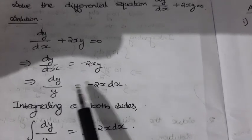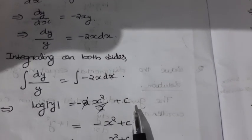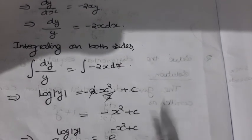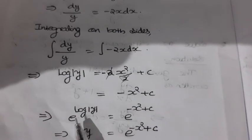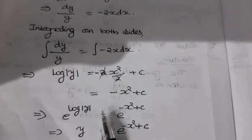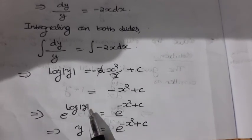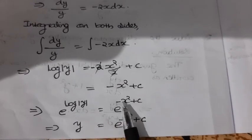This is in variable separable form. Integrating both sides: integral of dy/y = integral of −2x dx. We have integral of 1/y dy = log y. Integrating the right side gives −x². So log y = −x² + c, which means y = e^(−x² + c).